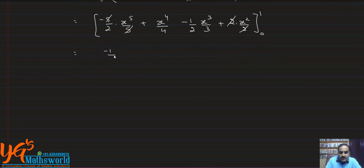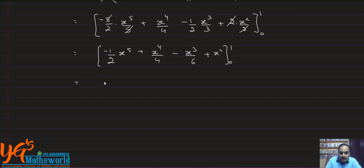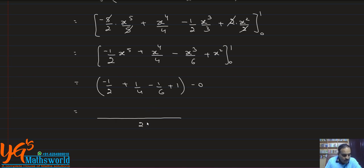Applying upper limit minus lower limit (lower limit is 0 so it vanishes): we get −1/2 + 1/4 − 1/6 + 1. Taking LCM of 2, 4, 6: LCM is 12. So we compute −6/12 + 3/12 − 2/12 + 12/12.